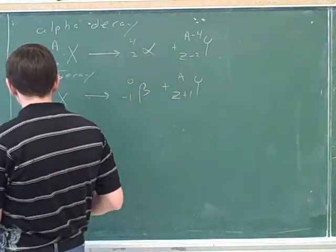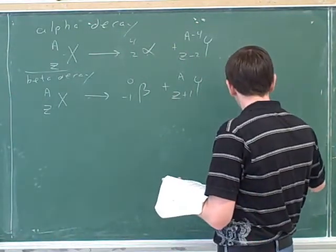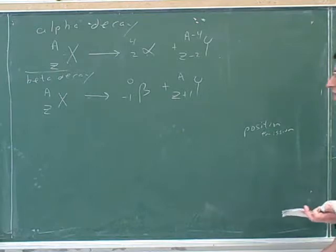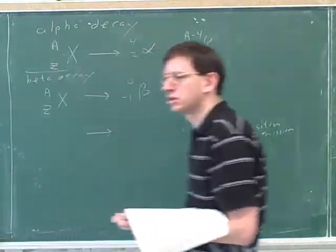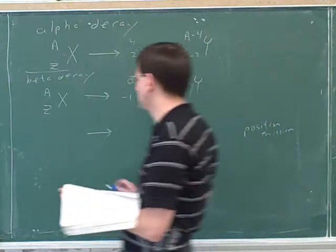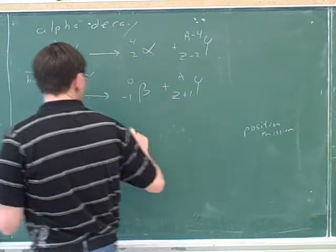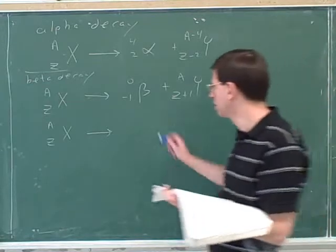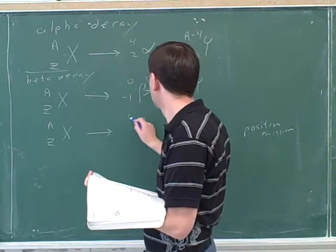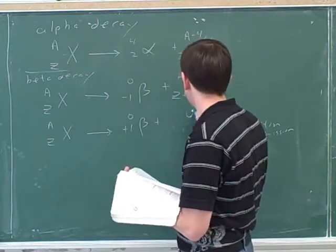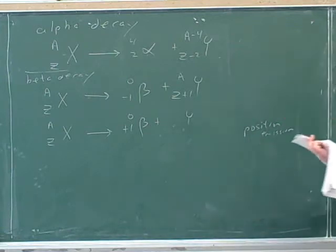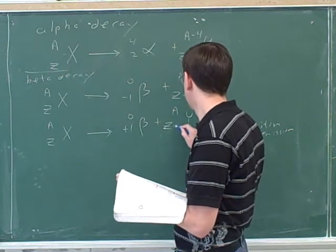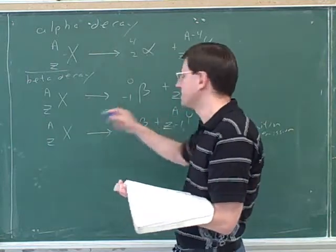There could also be a positron emission. In that case, would the positron be a starting material or a product? A product. Good. What's the symbol for a positron? It is beta. And its numbers would be? Zero and plus one. And then we can figure out the characteristics of the daughter nucleus. It would be A and Z minus one. Z minus one plus one is Z, and zero plus A is A.